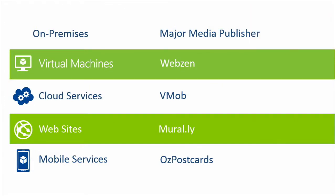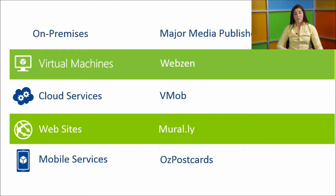Customers today are in production using Notification Hubs with backends across every model — from a major media publisher in the APAC region with a backend hosted on-premises using ASP.NET MVC, all the way to apps hosted in websites and Oz Postcards, which is hosted in mobile services and uses Notification Hubs in conjunction to hit scale targeted push scenarios.